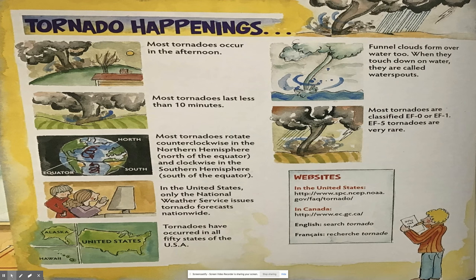Tornado happenings. Most tornadoes occur in the afternoon. Most tornadoes last less than 10 minutes. Most tornadoes rotate counterclockwise in the northern hemisphere, which is north of the equator, and clockwise in the southern hemisphere, south of the equator. In the United States, only the National Weather Service issues tornado forecasts nationwide. Tornadoes have occurred in all 50 states of the USA. Funnel clouds form over water too; when they touch down on water, they are called waterspouts. Most tornadoes are classified EF0 or EF1. EF5 tornadoes are very rare.